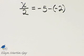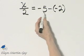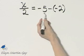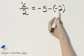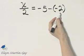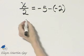Let's solve this equation for x. Notice on the right side I have a few like terms, some constants that I can combine.